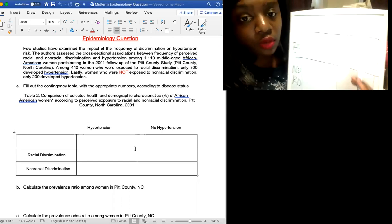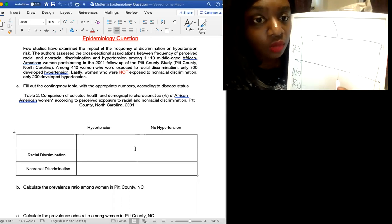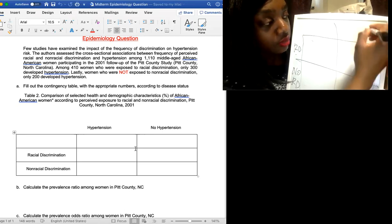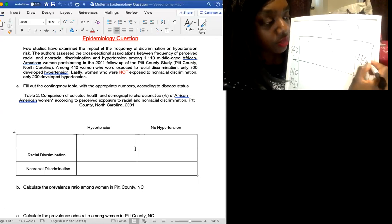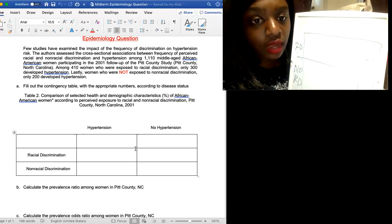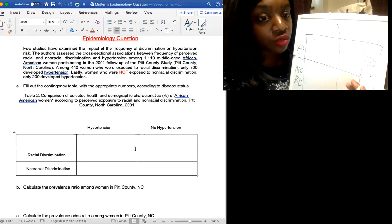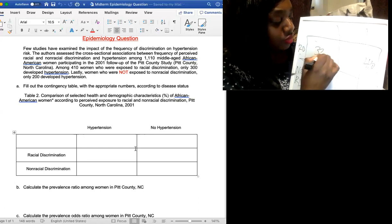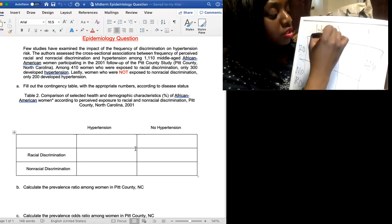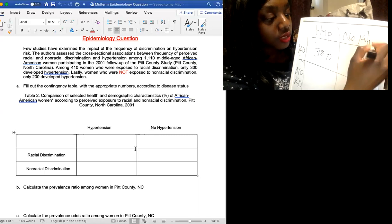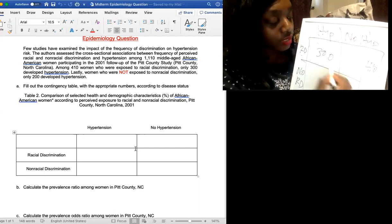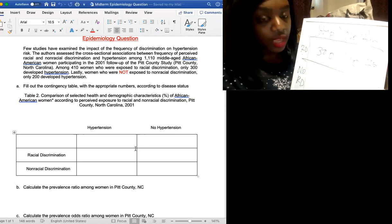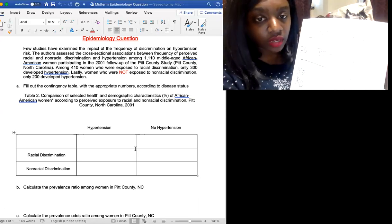The numbers here, it states that only 410 were exposed to racial discrimination. So over here we have 410. And then it states that 300 of those individuals actually develop hypertension. So that's 300. It's good to put hypertension here and no hypertension for the disease status. So we have 410 minus 300, so that should give us 110.